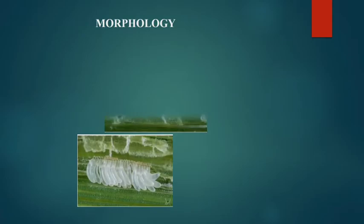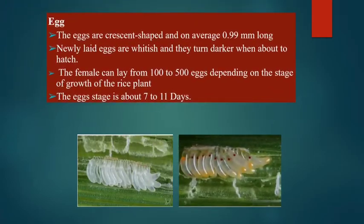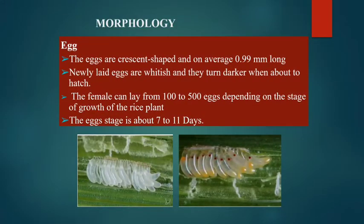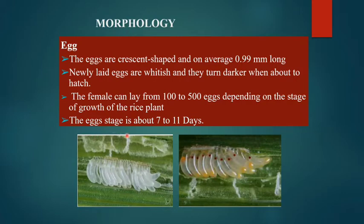Regarding morphology, the eggs are crescent-shaped, on average 0.99 mm long. The newly laid eggs are whitish and turn darker when about to hatch. The female can lay about 100 to 500 eggs depending upon the stage of growth of the rice plant, and the egg stage lasts about 7 to 11 days.